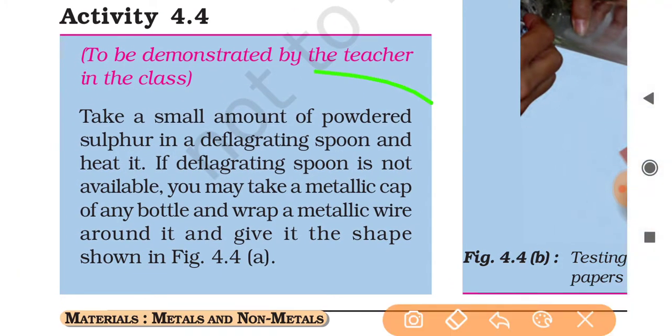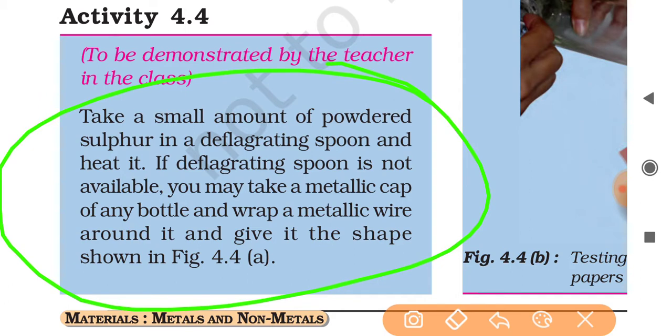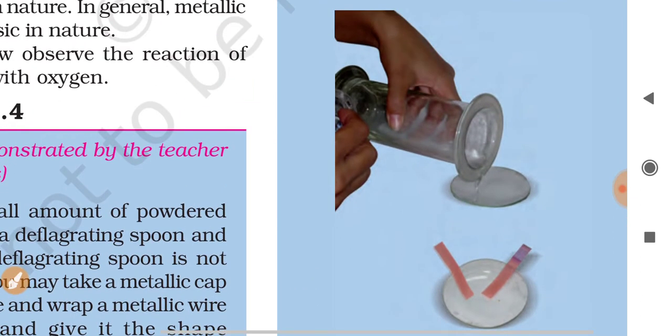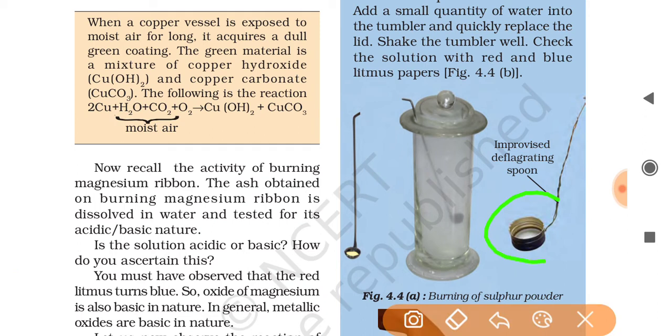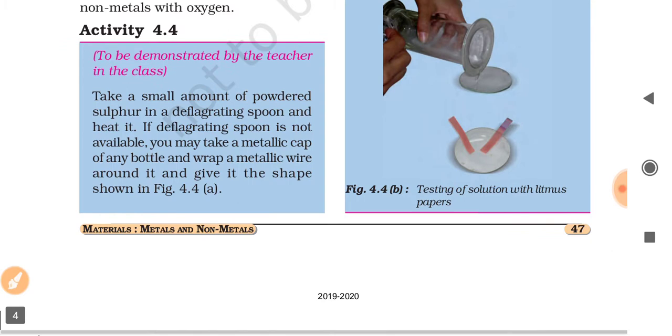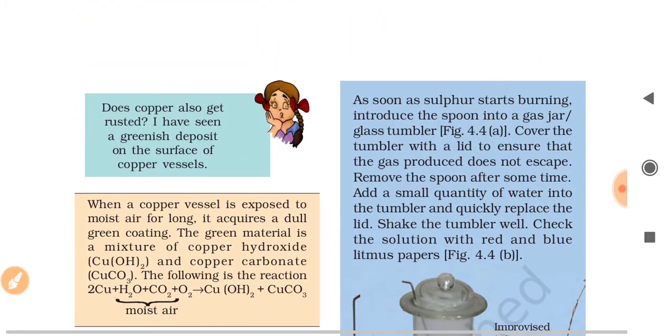Take a small amount of powdered sulfur in a deflagrating spoon and heat it. If deflagrating spoon is not available, you may take a metallic cap of any bottle and wrap a metallic wire around it and give it the shape shown in Figure 4.4. This type of structure you have to make - you can make it easily.